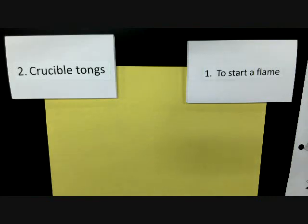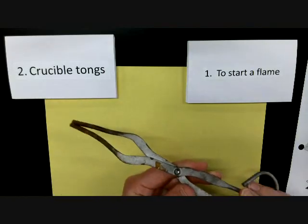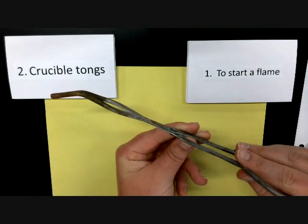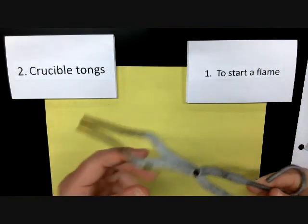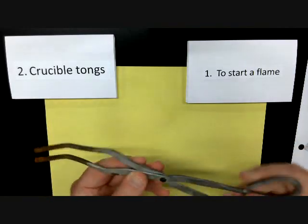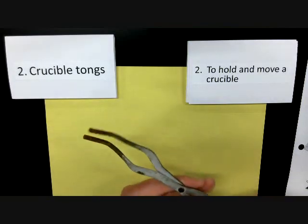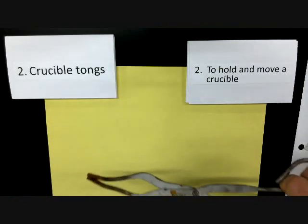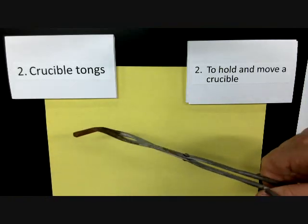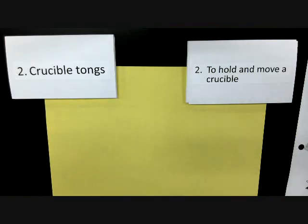Going horizontally across, the next item is called crucible tongs. Crucible tongs are one of our many types of tongs. If you look, the tip is pointed downward and there's a small opening — they're very flat. Crucible tongs are used to hold and move a crucible. I actually prefer to flip them over and have the pointed side down when holding it.